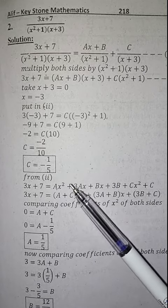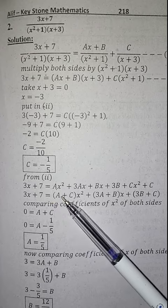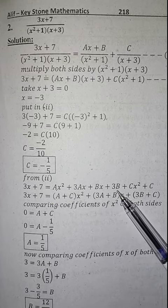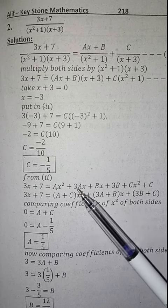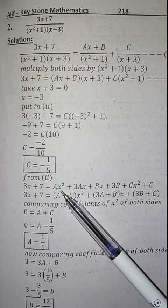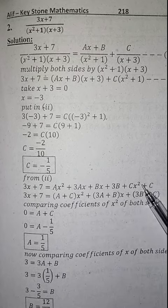Now from equation 2 which is 3x plus 7 is equal to x square plus 3x plus Bx plus 3B plus Cx square plus C. So this is our plan to calculate that the x square terms are like A x square plus C x square.